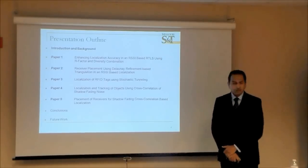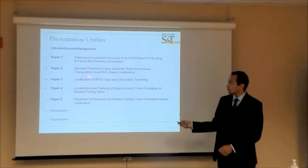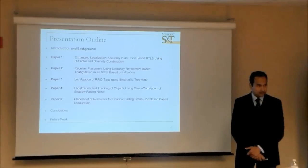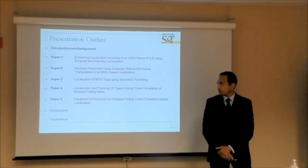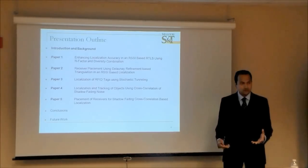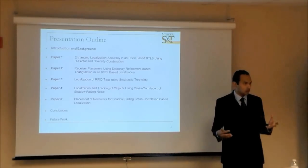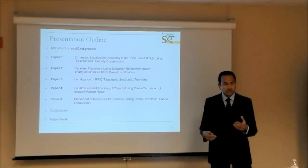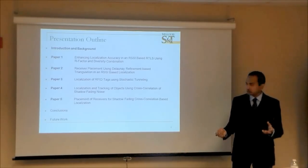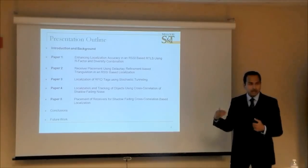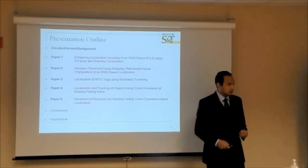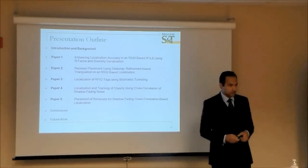This dissertation is organized into five chapters. The first chapter looks into the errors involved in estimating the radial distance between the transmitter and receiver from signal strength. The second chapter is about where to place receivers in a workspace to achieve a certain accuracy in locating a transmitter. The third chapter presents my new idea applied to RFID localization. The fourth chapter extends the third to frequencies in the range of 2.45 GHz. The final chapter addresses receiver placement when using my cross-correlation based localization technique.